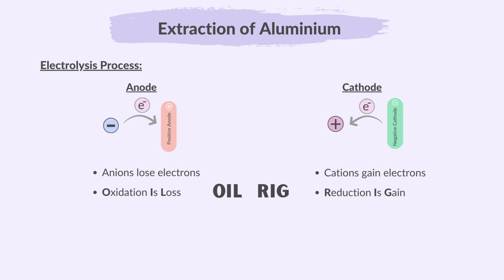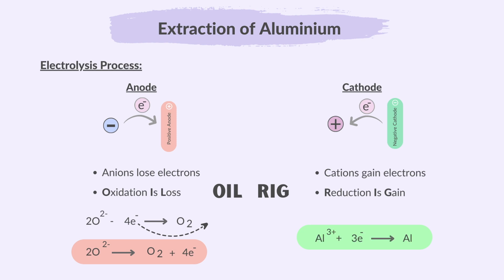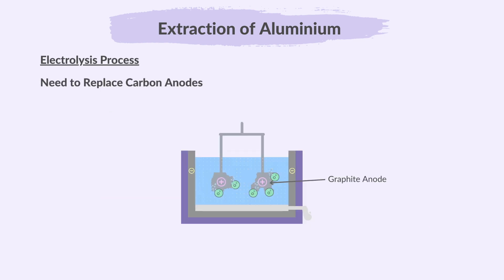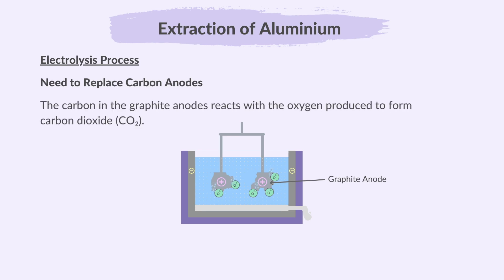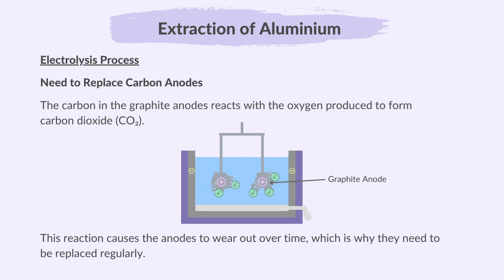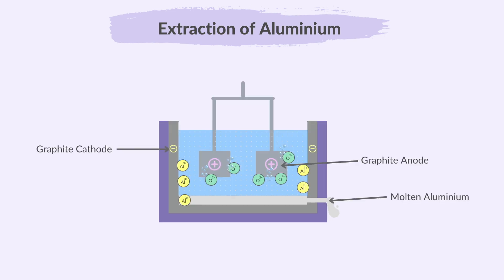For the electrolysis of aluminium oxide, these are the ionic half equations. At the anode, two oxide ions lose four electrons to form one oxygen molecule. At the cathode, an aluminium ion gains three electrons to form aluminium metal. Why do carbon anodes need to be replaced? The carbon in the graphite anodes reacts with the oxygen produced to form carbon dioxide. This reaction causes the anodes to wear out over time, which is why they need to be replaced regularly. In summary, aluminium oxide is dissolved in molten cryolite and an electric current is passed through it. Aluminium is formed at the cathode and oxygen is formed at the anode.